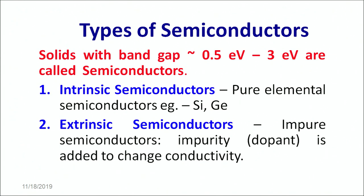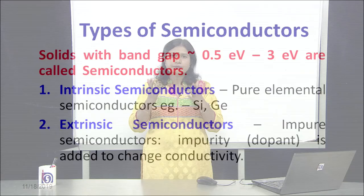The intrinsic semiconductors are pure elemental semiconductors such as silicon, germanium, etc. Extrinsic semiconductors are impure semiconductors. By the word impure, we mean that an atom of something else is added inside the material. So an impurity or a dopant is added to change the conductivity. Such semiconductors are known as extrinsic semiconductors.